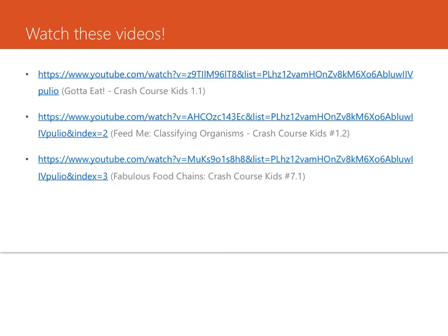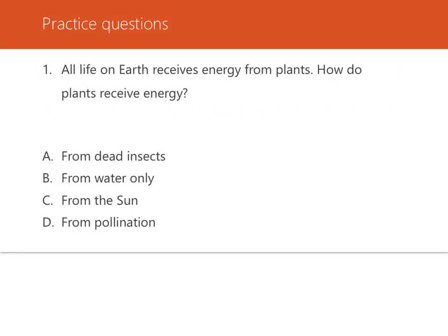Please take the time to watch these three other videos and take more notes as you follow along. Practice question one: all life on earth receives energy from plants — so how do plants receive energy? Plants receive energy from the sun. They are then able to make their own food through photosynthesis.